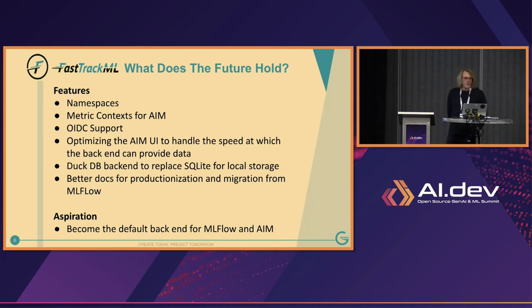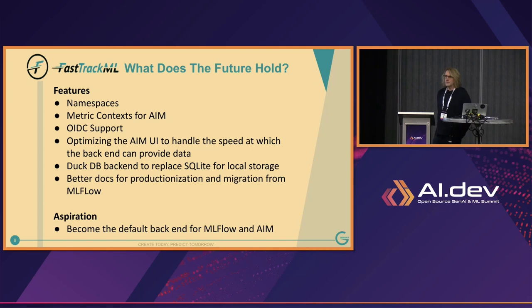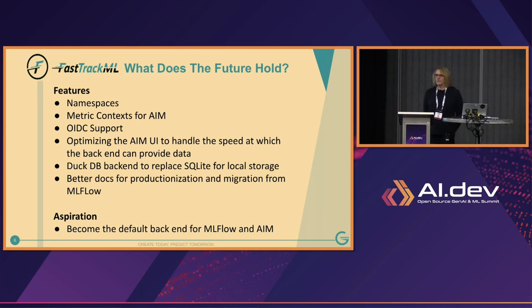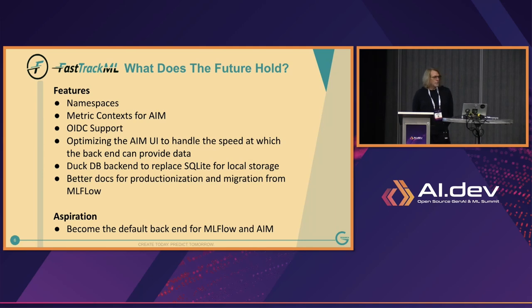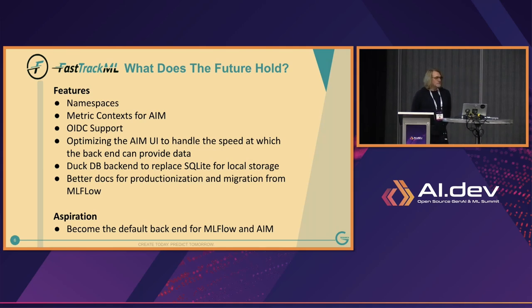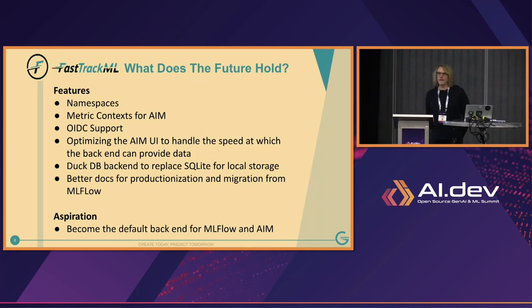What does our future hold? We're doing more feature development. We've got a namespacing feature in beta. What namespacing allows you to do is basically segregate your experiments into their own little world so data scientists or researchers can use the tool without their work being intermingled with others. It basically unlocks the use case where an ops team could stand this up as a single instance and multiple researchers could use it without needing to know the nitty-gritty about running Postgres. We've also implemented a lot of the REST API features in both MLflow and AIM, but there is more work to be done. Right now we're working on metric contexts, which is a very cool feature for slicing and dicing your experiment data. OIDC support is also interesting to us — the namespace feature right now isn't fully locked down for complete RBAC multi-tenant use cases, but we aim to get there.